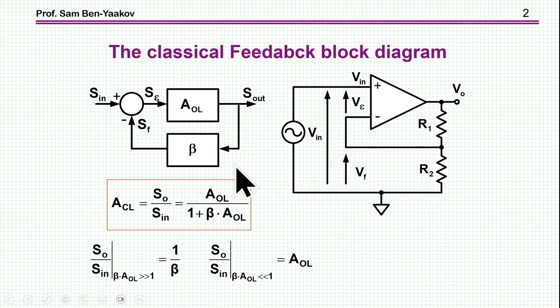So what is the problem with the classical feedback block diagram, which is shown here, which is very well known, of course. Well, what we have here is the summing junction. The signal is coming into the summing junction, there is an A open loop, there is a feedback path, beta.